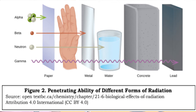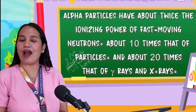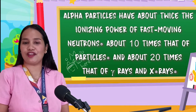Beta particles can pass through paper or a thin layer of material but are stopped by a thin layer of metal. Gamma radiation is very penetrating and can pass through thick layers of most materials — some high-energy gamma radiation can even pass through a whole plate of concrete. Dense, high atomic number elements such as lead can effectively attenuate gamma radiation and are used for shielding. The ionizing power of different emissions varies greatly: alpha particles have about twice the ionizing power of fast neutrons, about 10 times that of beta particles, and about 20 times that of gamma rays and X-rays.